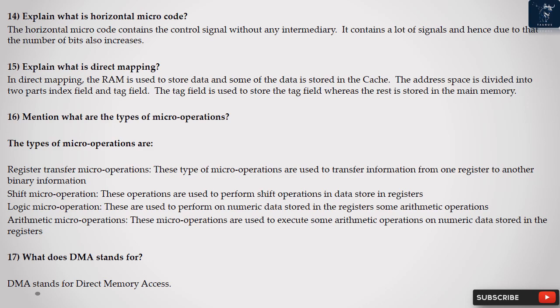Question 15: Explain what is direct mapping? In direct mapping, the RAM is used to store data and some of the data is stored in the cache. The address space is divided into two parts: index field and tag field. The tag field is used to store the tag field whereas the rest is stored in the main memory.